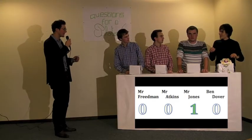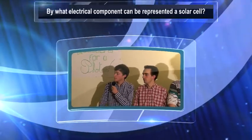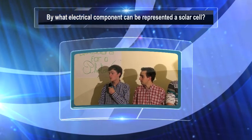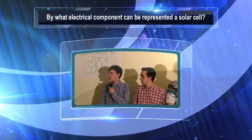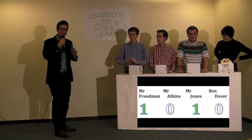Unfortunately, not quite, Ben. By its p-n junction, a solar cell can be represented by a diode, and this diode switches into a current generator when the cell receives photons. And that's the right answer.